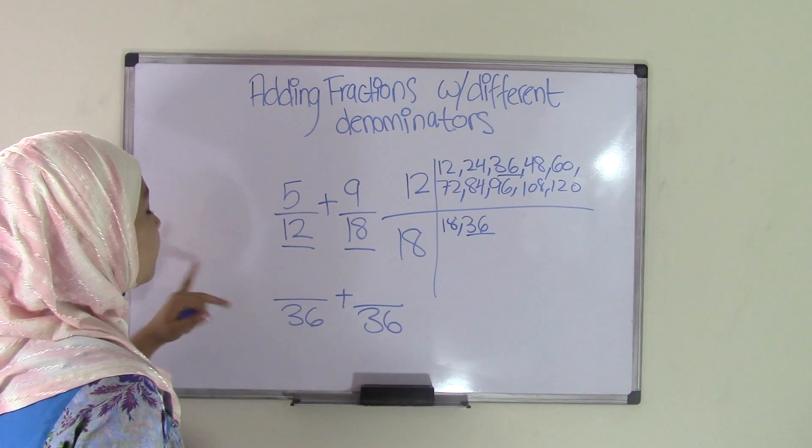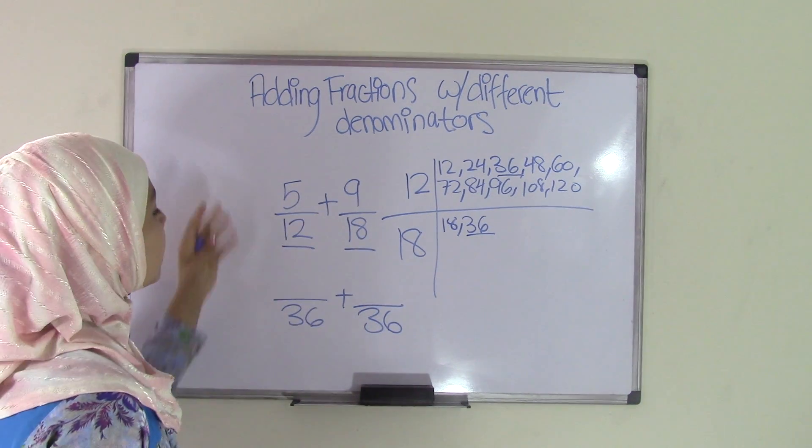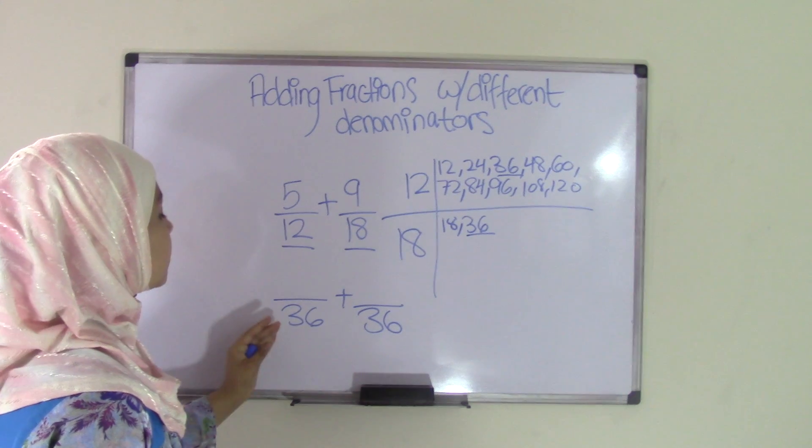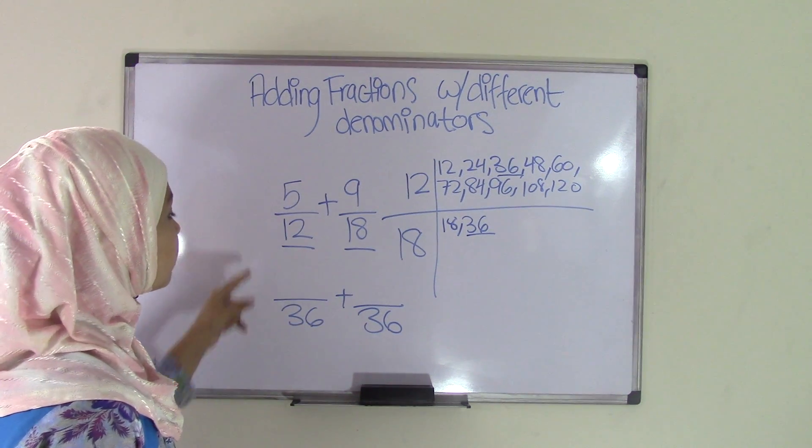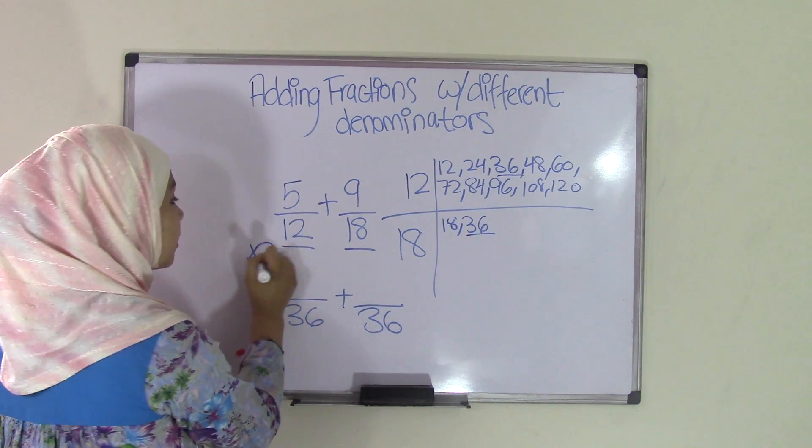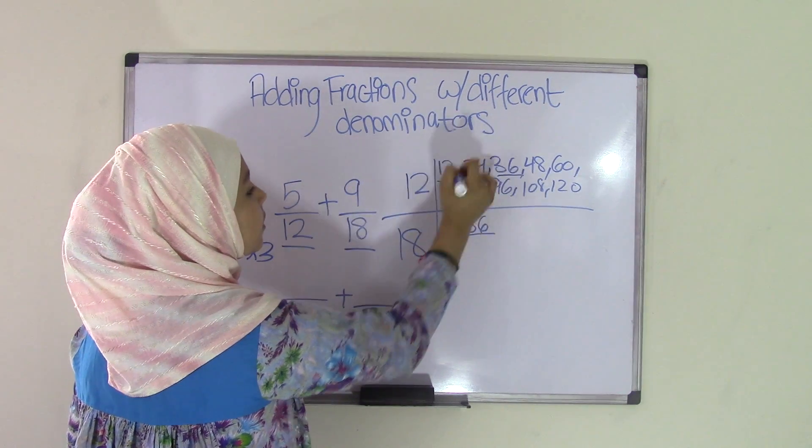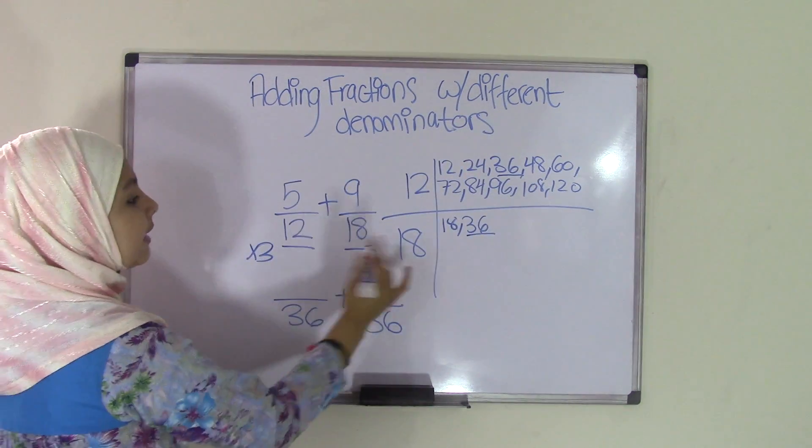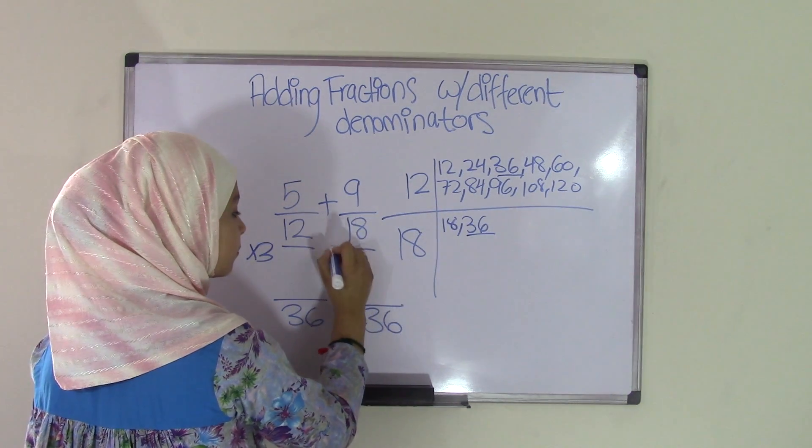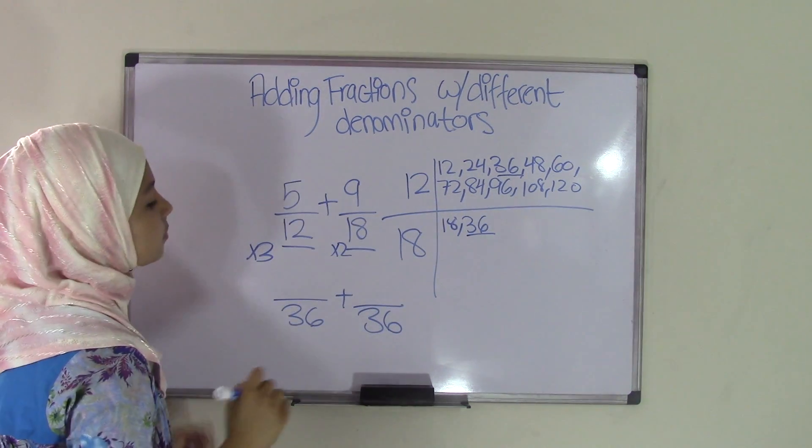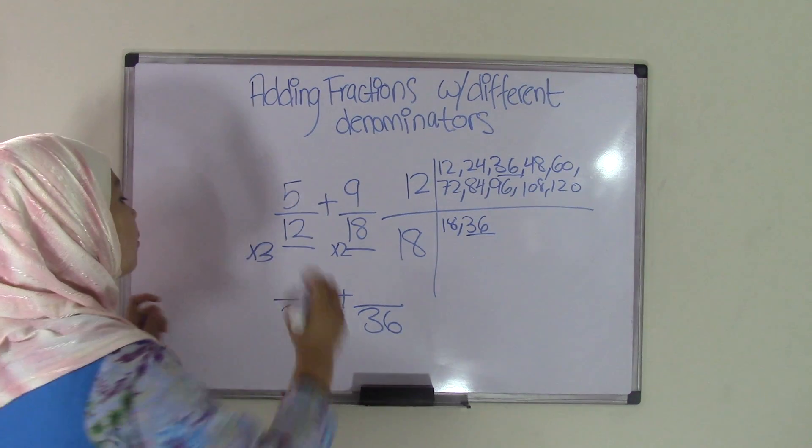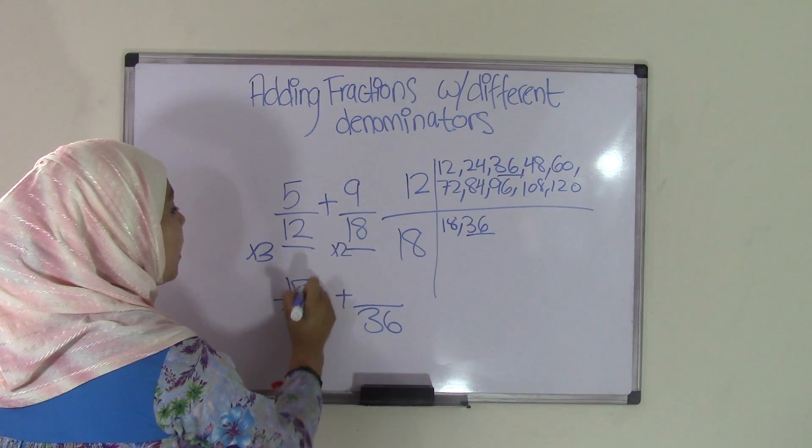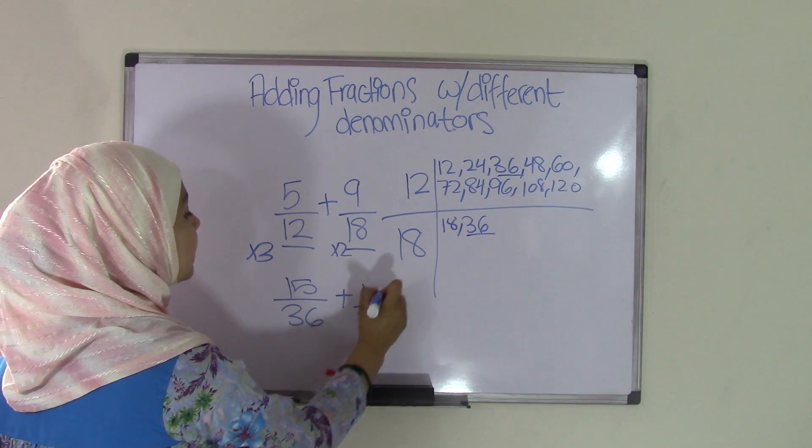What you're going to do is look at the denominators from before and say, what times 12 is 36 and what times 18 is 36? Well, 12 times 3 is 36. Because over here, according to this, 12 times 3 is 36, and 18 times 2 is 36. So what you're going to do is use these numbers and multiply them by the numerator. So 5 times 3 is 15, and 9 times 2 is 18.